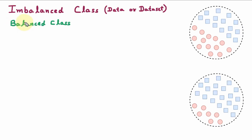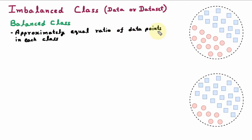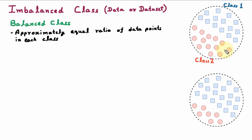Balanced class contains approximately equal ratio of data points in each class. Here in the diagram, we can see that we have class 1 which contains squares and class 2 which contains circles. The number of squares are approximately equal to the number of circles, so this is called Balanced Class, Data or Dataset.